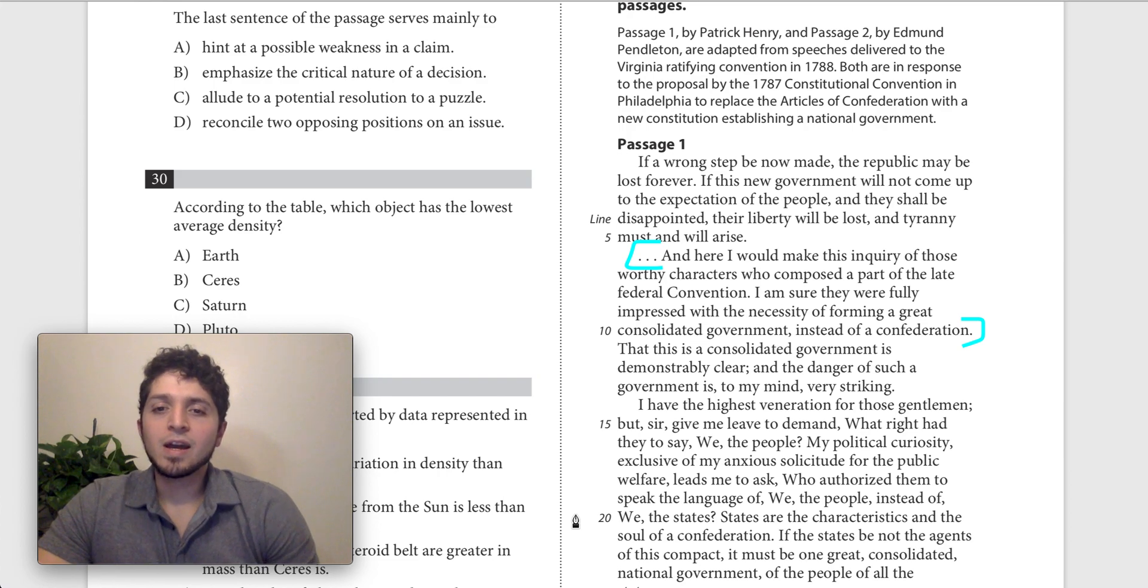So this is basically him, Henry is making this claim that he says I'm sure that those who did the convention, those who did propose this new constitution, I'm sure they thought that they had to create a new consolidated government instead of Confederation. What we should register here is that this is him sort of making not a concession, but he's sort of framing his issue.